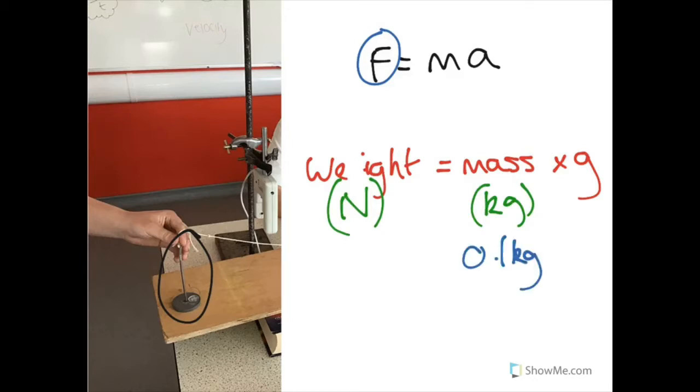Each mass is 100 grams, which is the same as 0.1 kilograms. If we times that by gravity on earth, which is 10, that means each 100 gram mass has a weight of one newton. So if you just have one, that is one newton weight. If you put two on, that will be two newtons of force, and so on.